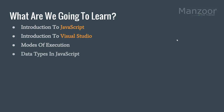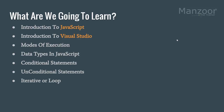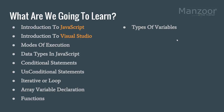Then we will go through various data types in JavaScript, then control structures — we will see conditional statements, unconditional statements, and iterative or loop statements. Then we will try to understand arrays in JavaScript, then functions. We will also see various types of variables — basically a local variable and a global variable — and we will try to cover scopes.